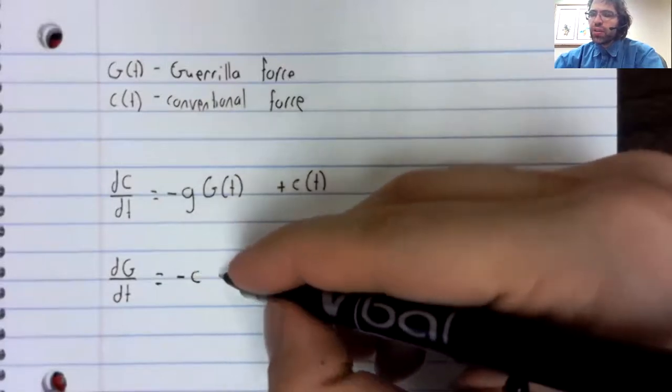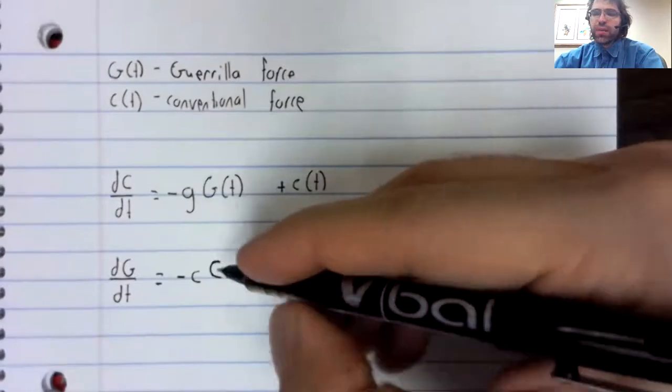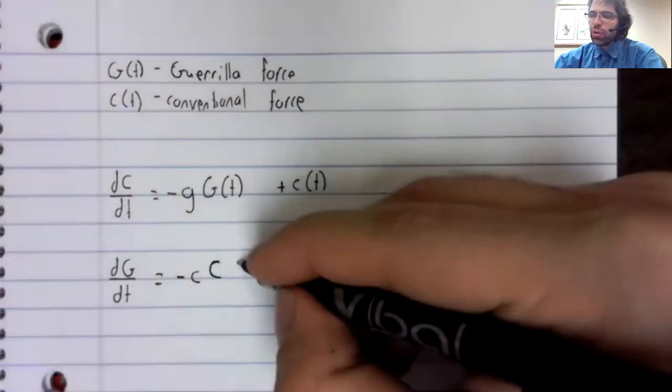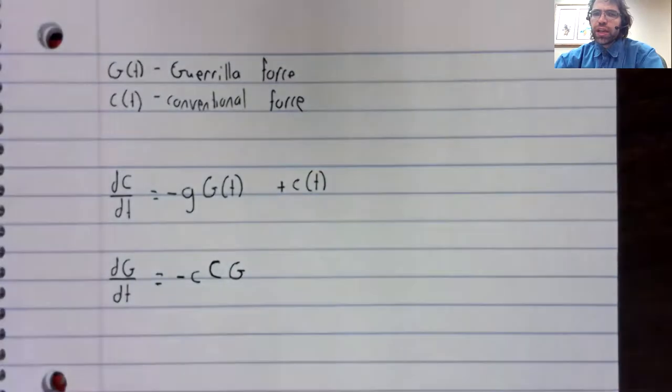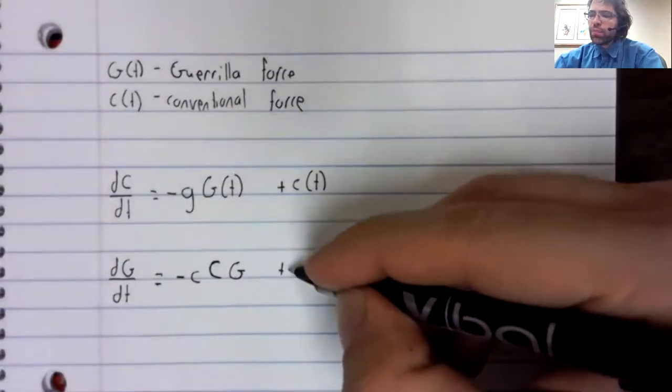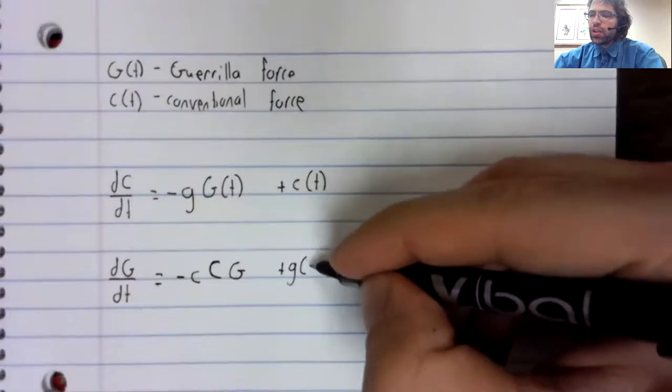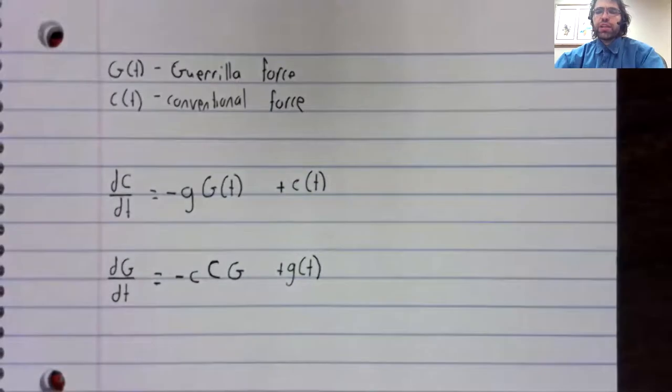Instead of just having the capital C that you would expect from previous material, we've also got a capital G in there, and then the expected reinforcement term.